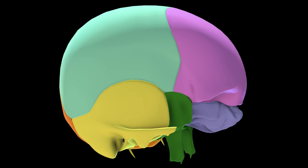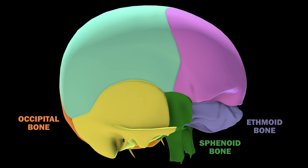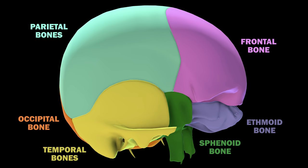So those were the eight cranial bones. Again, these included the occipital bone, the sphenoid bone, the ethmoid bone, the frontal bone, a pair of parietal bones, and a pair of temporal bones.